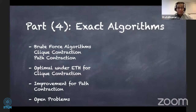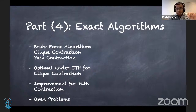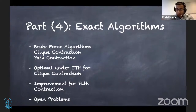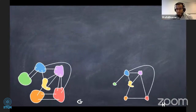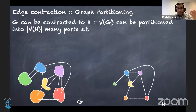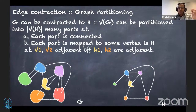As promised, we will look at two brute-force algorithms: one for clique contraction and one for path contraction. We'll argue the algorithm for clique contraction is optimal under ETH, and see that the algorithm for path contraction can be improved. As in other sections, we'll close with some open problems. To reiterate: H-contraction asks whether we can partition V(G) into |V(H)| many parts such that each part is connected, and each part is mapped to some vertex in H such that V1 and V2 are adjacent if and only if H1 and H2 are adjacent.